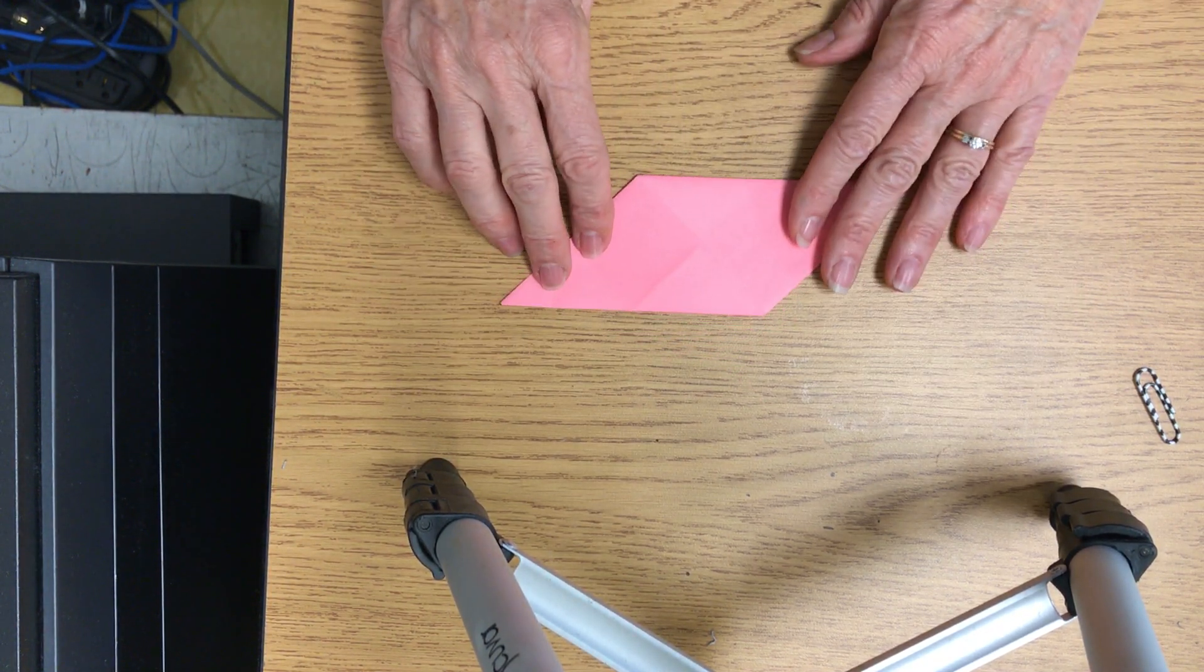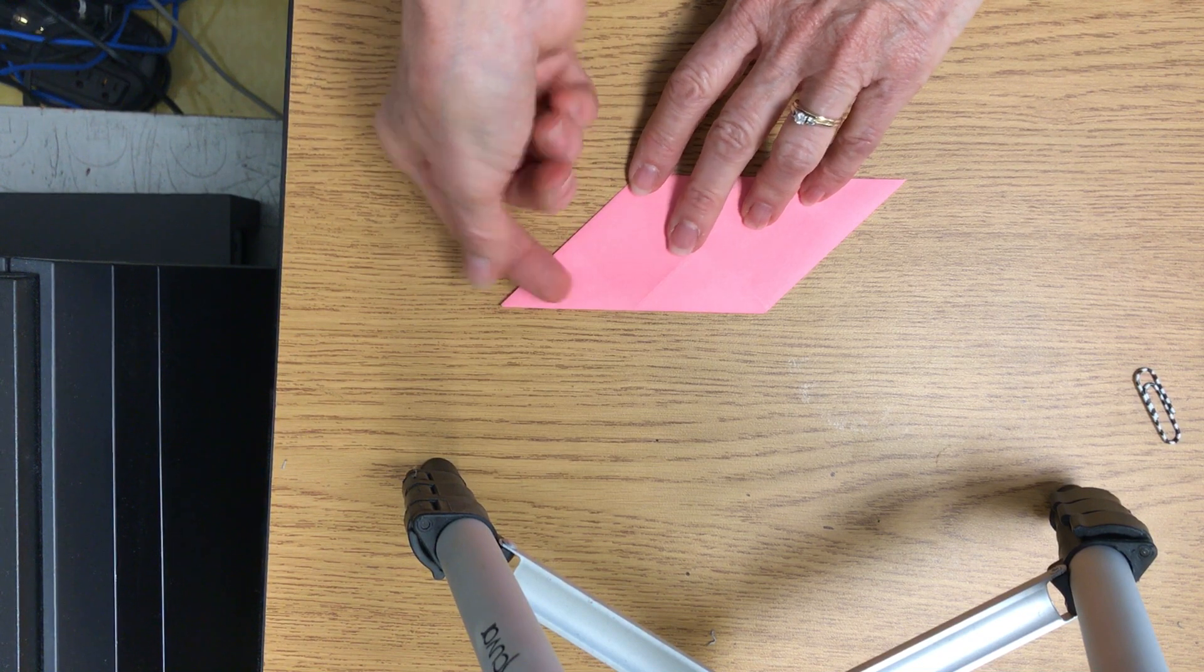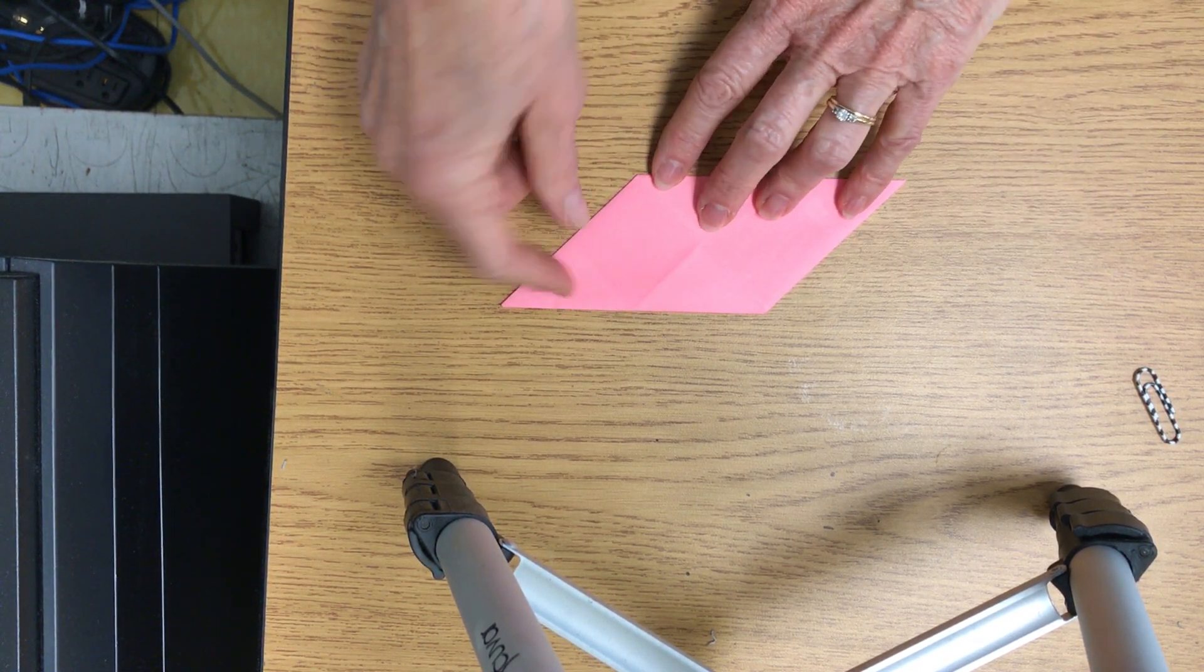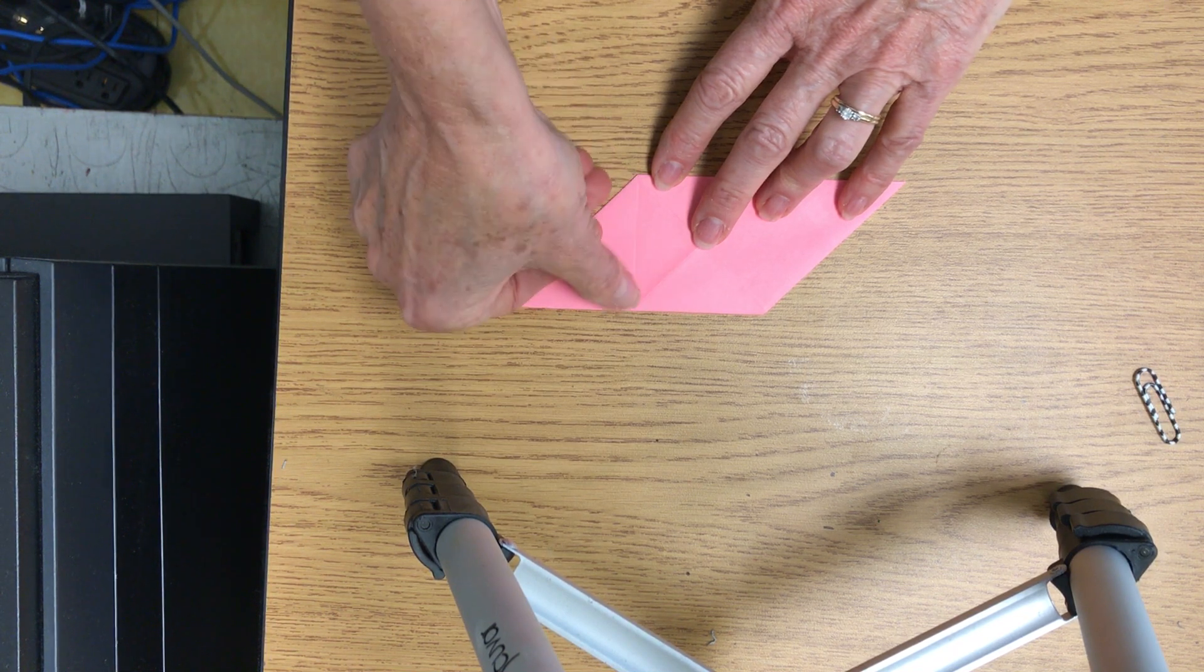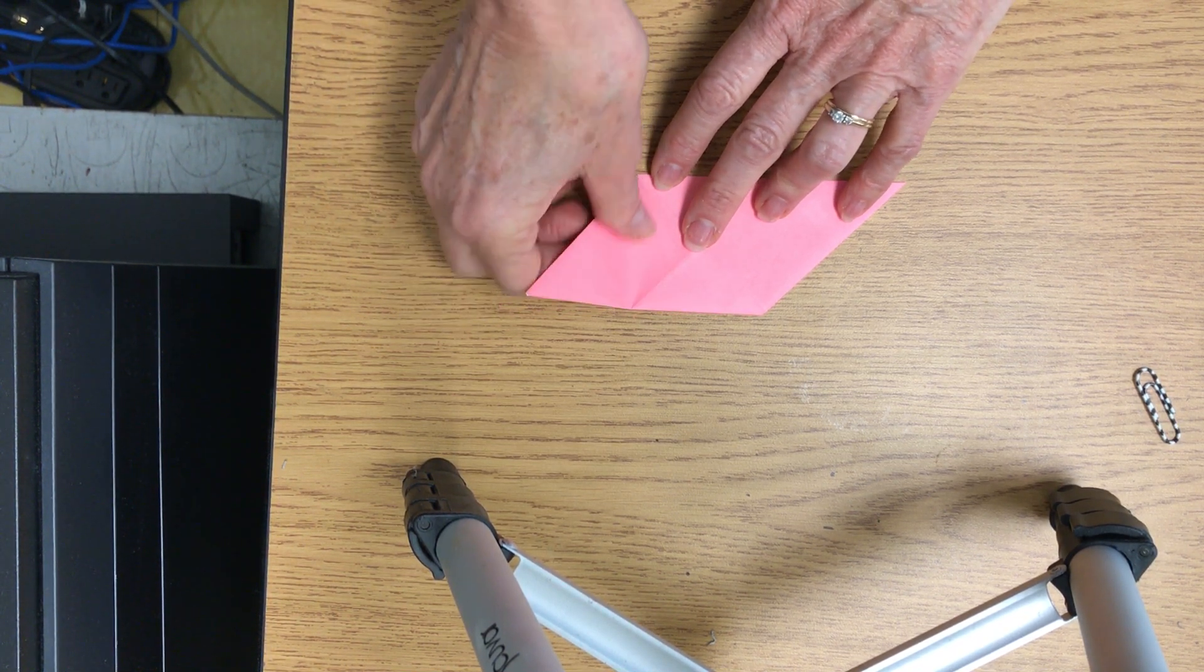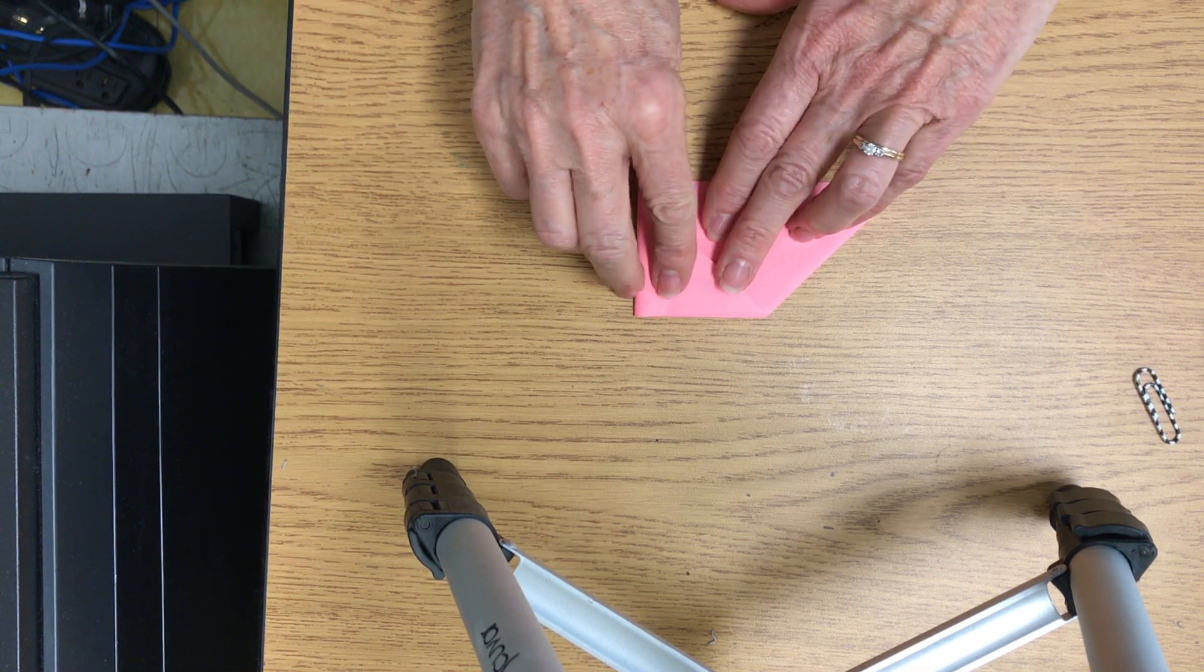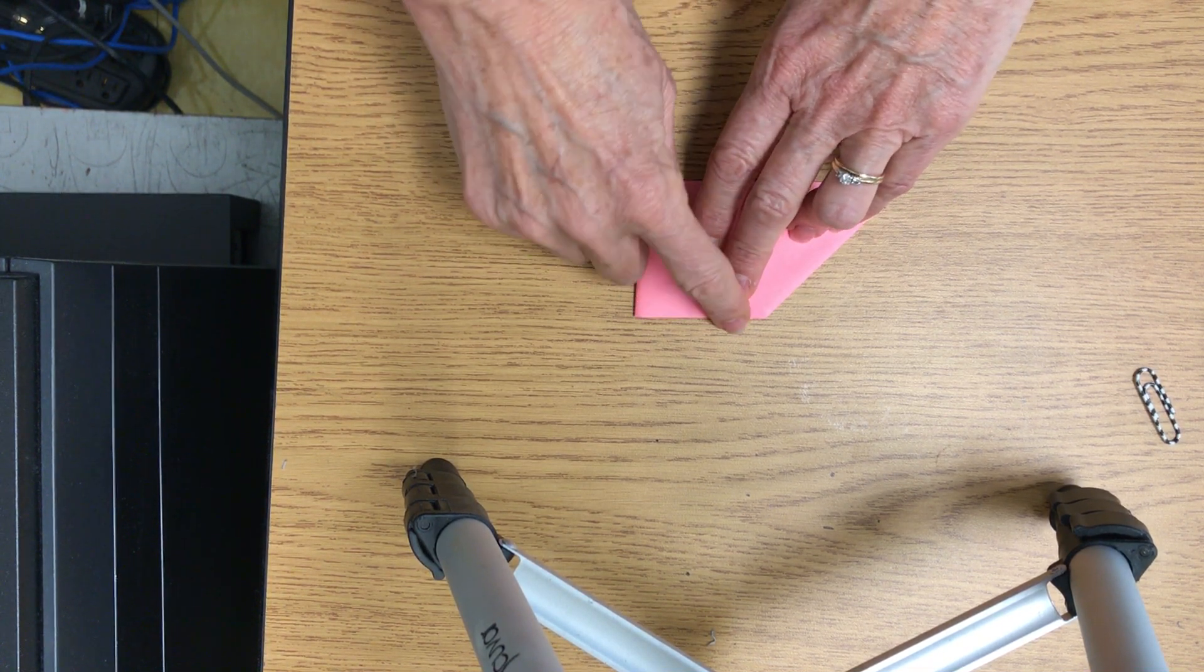Now I flip it over, and I'm going to fold these flaps into the center. So see this line here? I'm making a cube. So I'm folding this up straight. It's going to line up on the edge like that.